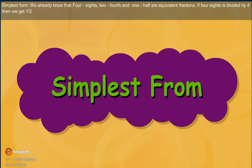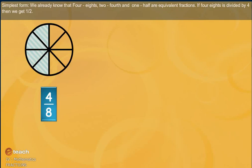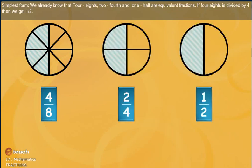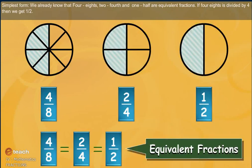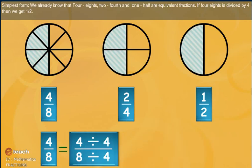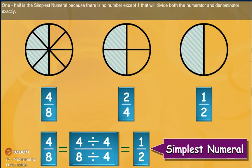Simplest form. We already know that four eighths, two fourths, and one half are equivalent fractions. If four eighths is divided by four, then we get one by two. One half is the simplest numeral because there is no number except one that will divide exactly both numerator and denominator.